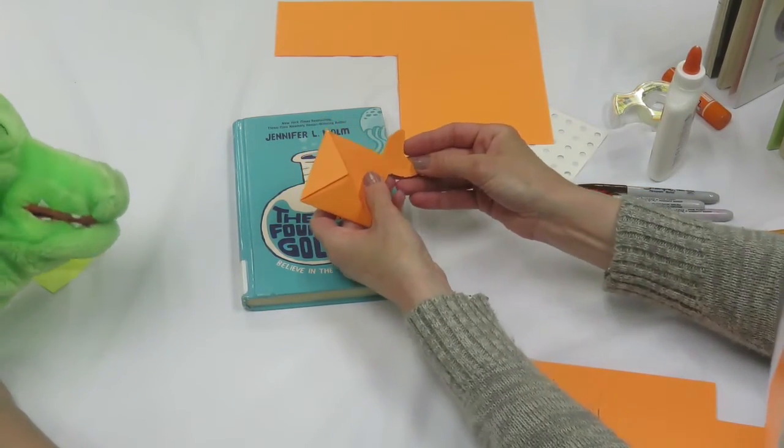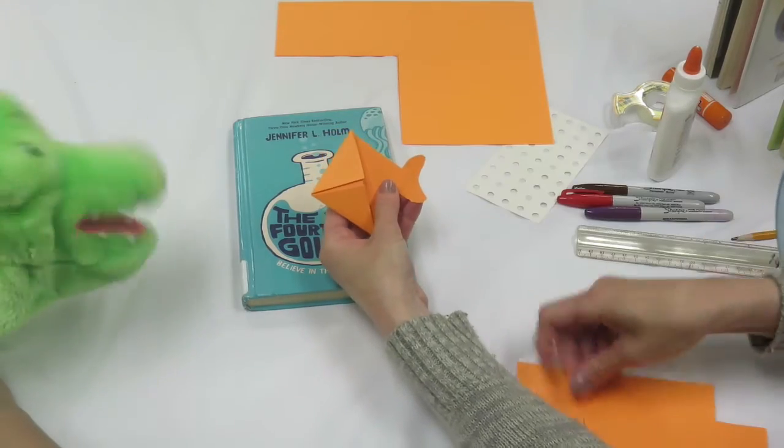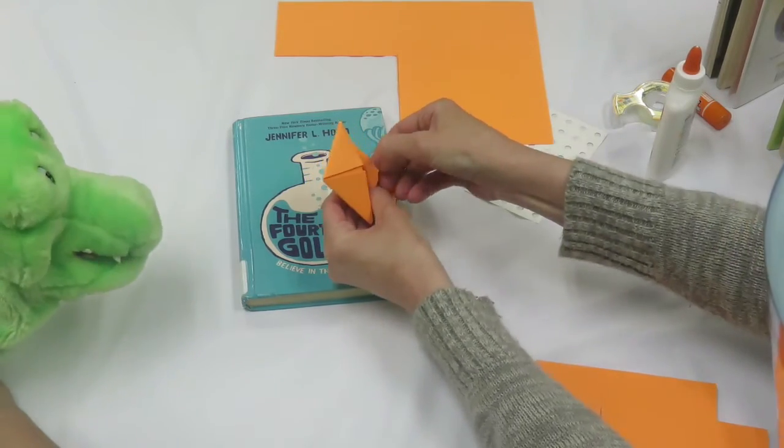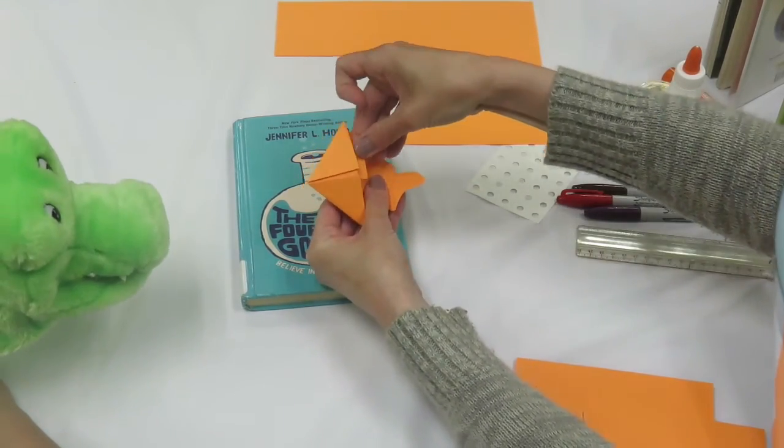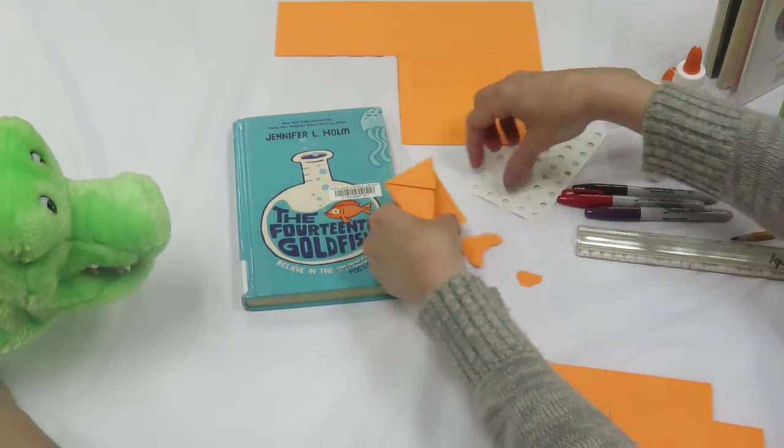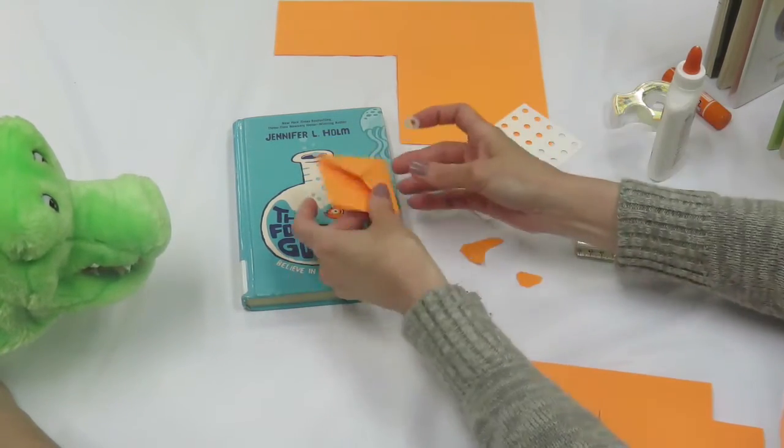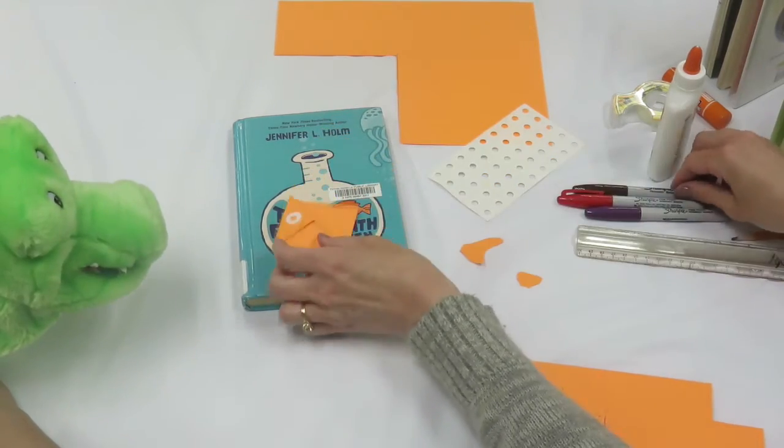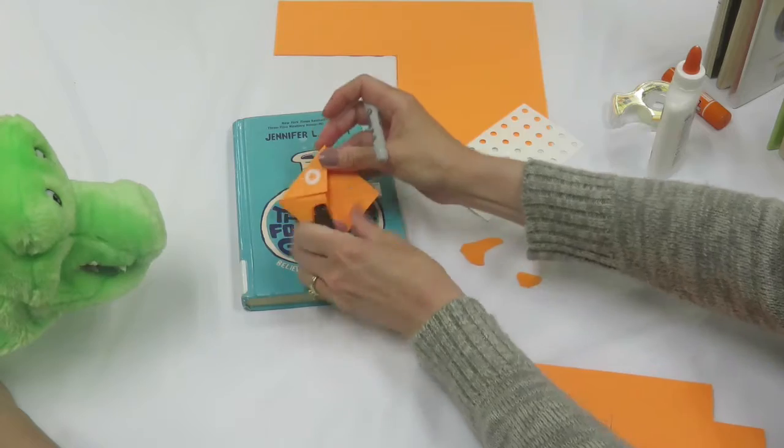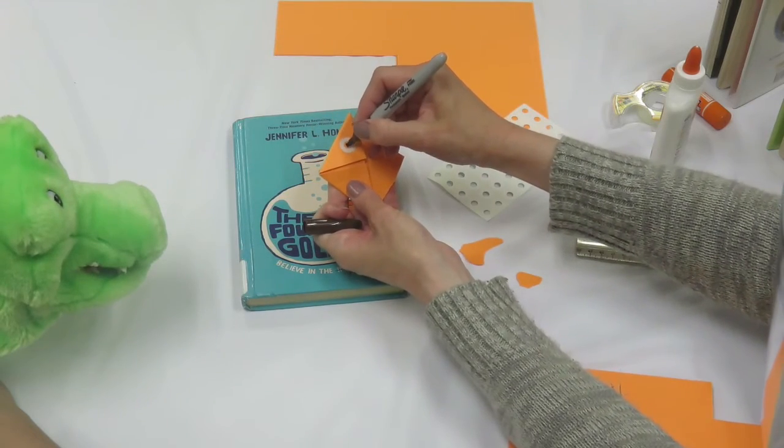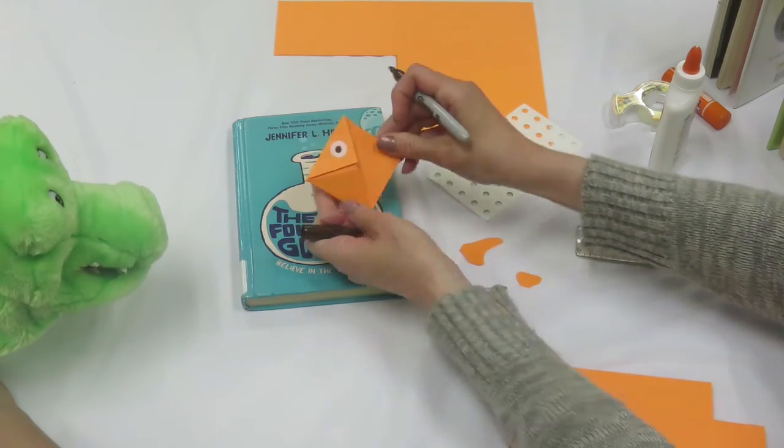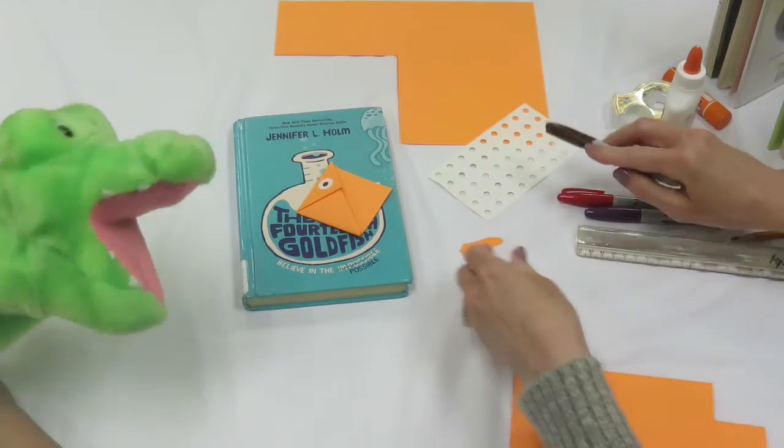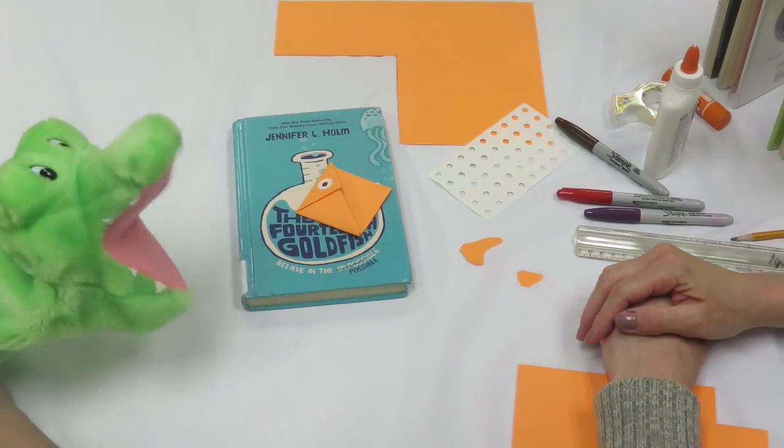You could add a cut out tail, looks like a fish. Add all kinds of details. If you have any of these paper hole reinforcements, they work as an eye. Then you can use your markers and do whatever you think of in your head. It's however you want your bookmark to be.